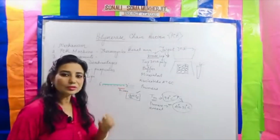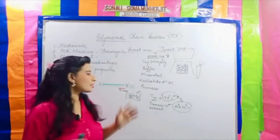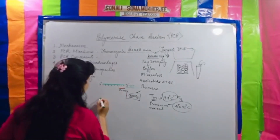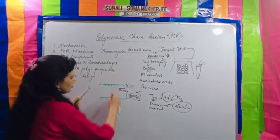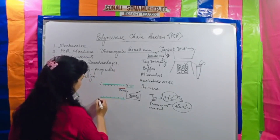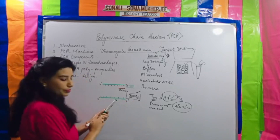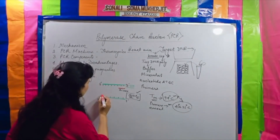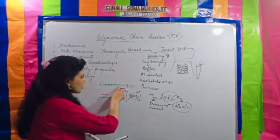Primers are short oligonucleotide sequences that anneal at the 3' hydroxyl end. The question is: why do we prefer to add the primers at the 3' hydroxyl end? The reason is that primers carry short nucleotide sequences which should be complementary to the template strand. After the two strands separate, primers are added to the 3' hydroxyl ends of the pure single strands.